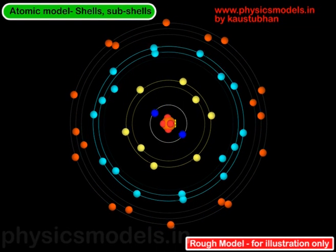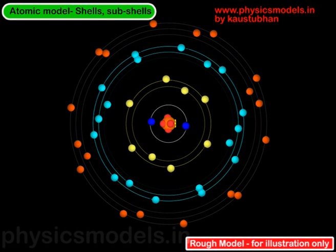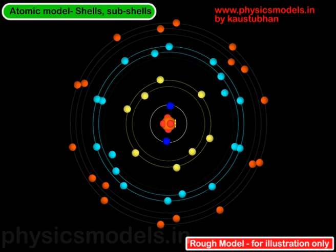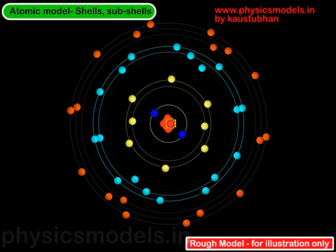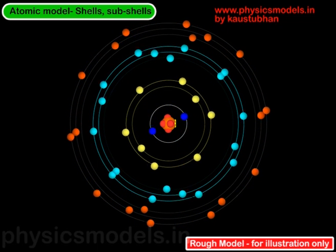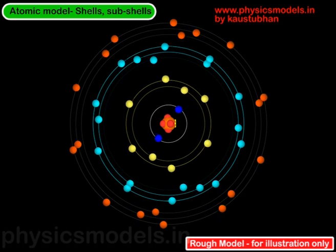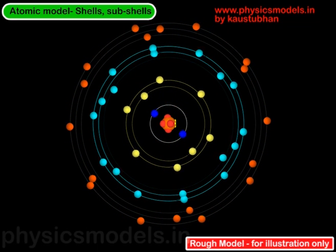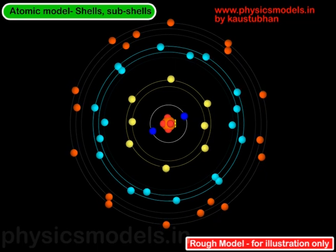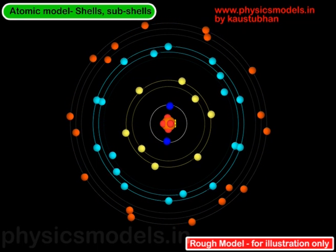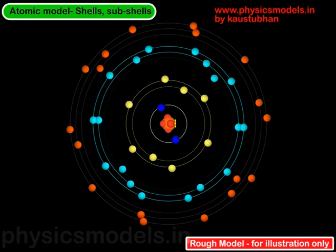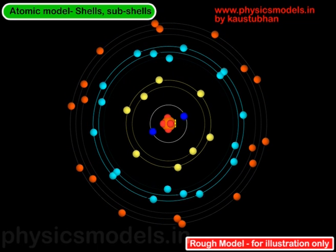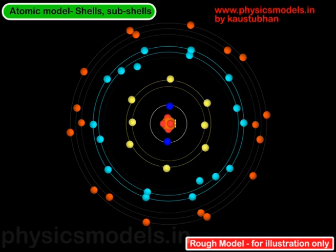In this video I would like to explain in very simple terms the concept of shells and sub-shells and electronic configuration of an atom. The atomic theory started with Bohr postulating that electrons revolve around a nucleus much like planets revolve around the sun. I'll take that as a starting point and then go to the valence theory.